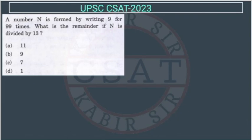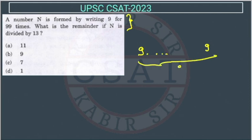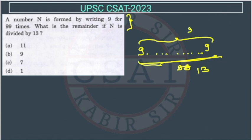In this question we have to use the concept of divisibility. This question looks tough but it is very easy. They are writing the digit 9 a total of 99 times, so N is a 99-digit number made entirely of 9s. We need to find the remainder when N is divided by 13.